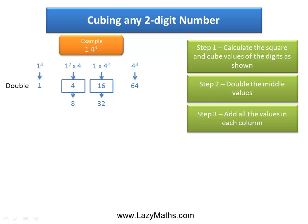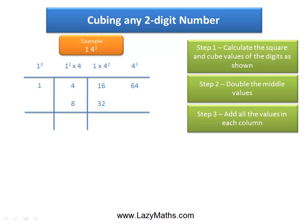The third step is to add all of these numbers. So 1 goes as 1, 4 plus 8 is 12, 16 plus 32 is 48, and 64 goes in as 64.